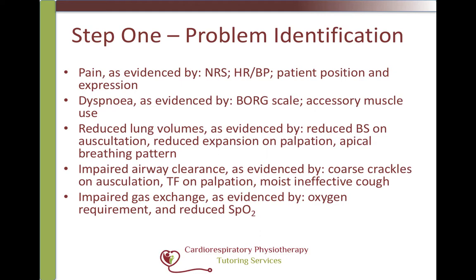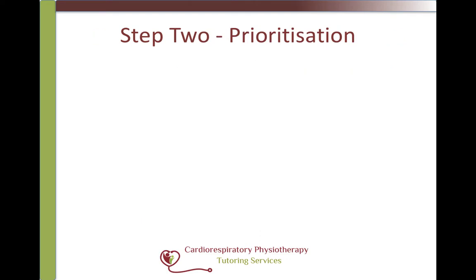Now we have our impairments — how do we know where to start with treatment? Many advocate addressing the patient's most significant symptom first, but I disagree. I think you need to identify what is causing or compounding the other impairments. In this situation, pain is the most significant impairment. Because the patient is in pain, she is unable to take deep breaths. This has likely exacerbated the reduced lung volumes that would be present anyway following surgery, but would be less significant if she weren't in pain. Because of these reduced lung volumes and inability to take a deep breath, she can't get air behind secretions to clear them with a cough, and the pain is also limiting the cough itself.